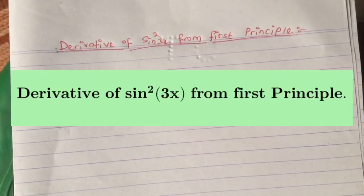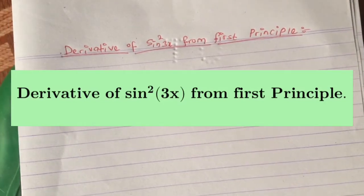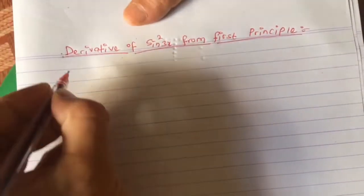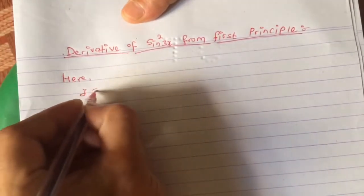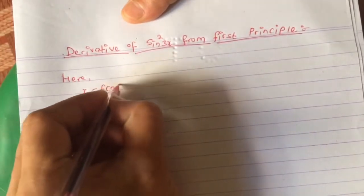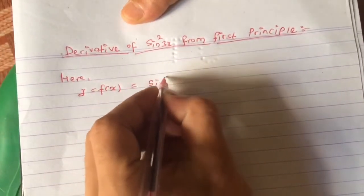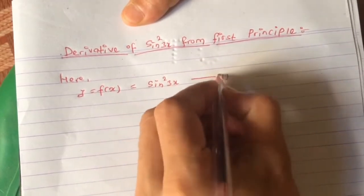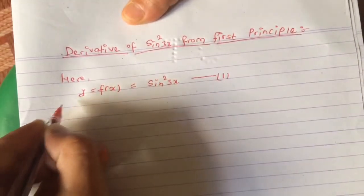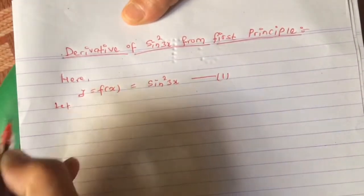Hello, welcome to Knowledge of Physics. In this video you will learn to find out the derivative of sine square of 3x from the first principle. The given function is denoted by y = f(x) = sin²(3x). Let this be equation 1.